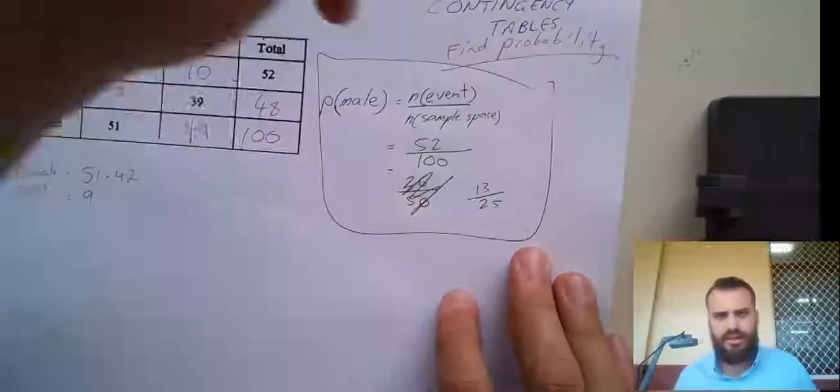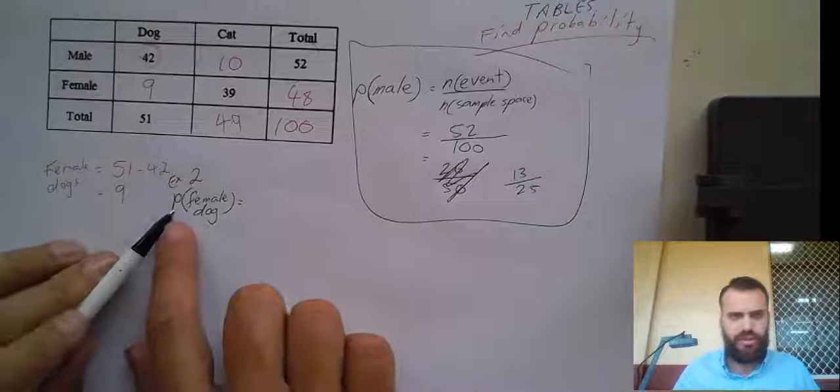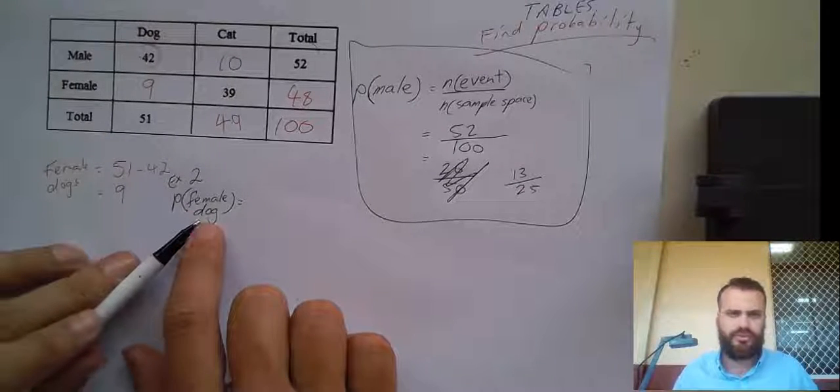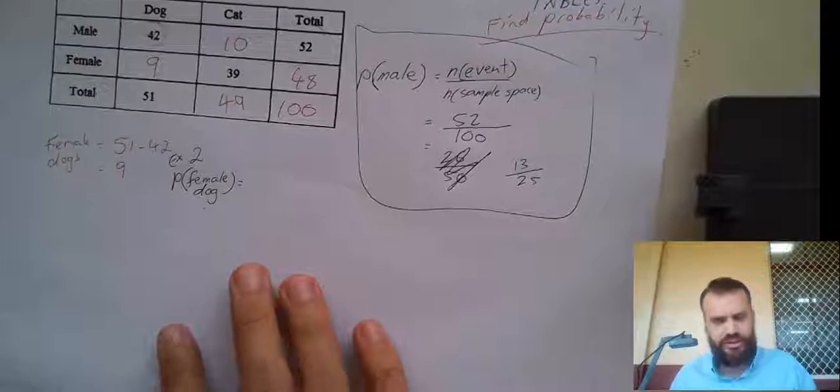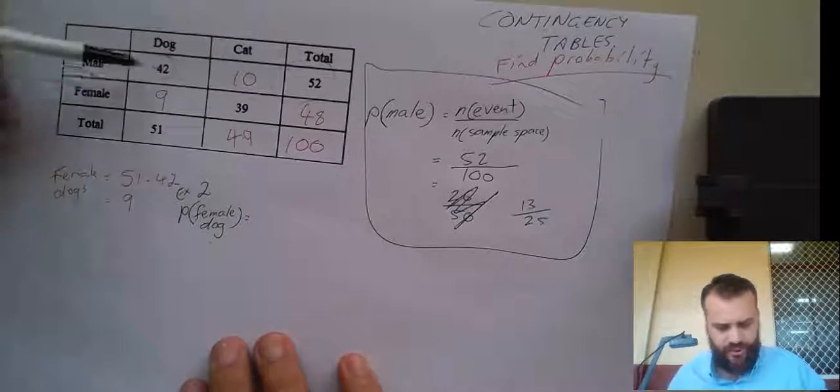Okay, I'm going to do a second one here. Let's take a look at a second question. All right, so here's our second example. The probability of a female dog. Okay, so somewhere in this table is female dogs. Let's see. Female dogs. Right there.